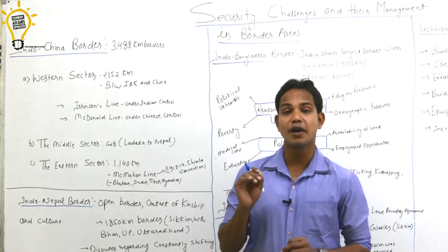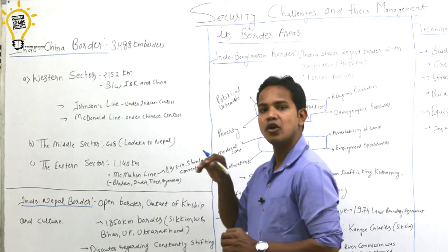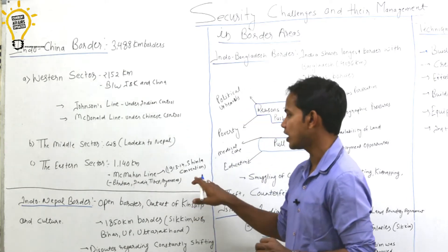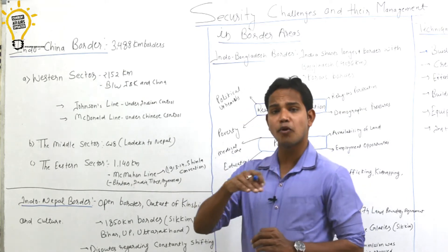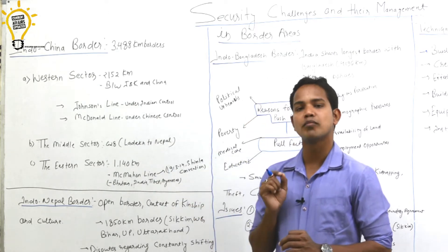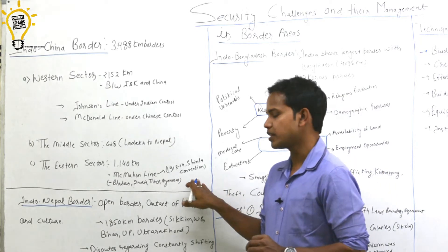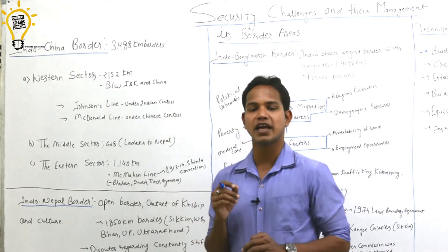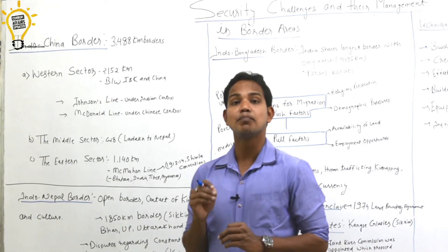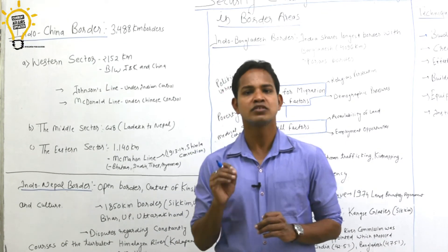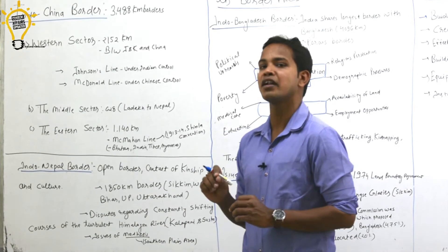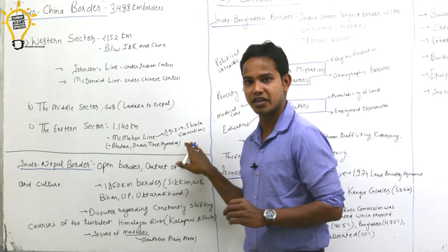When McMahon Line was signed, Tibet and British Sir Henry McMahon signed the Simla Convention in 1913-1914. In the Simla Convention, Sir Henry named the border he made with Tibet as the McMahon Line. When Tibet was occupied by China, China said this McMahon Line was formed illegally because Tibet was earlier part of China. Therefore, Tibet did not have any right to sign any independent convention with any other nation, especially the Britishers.